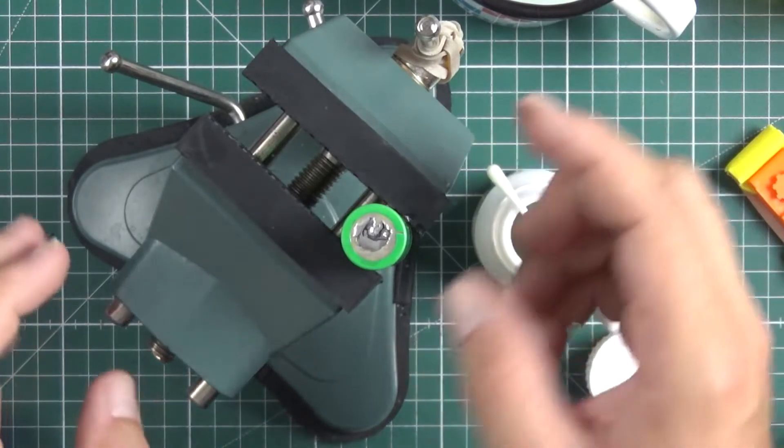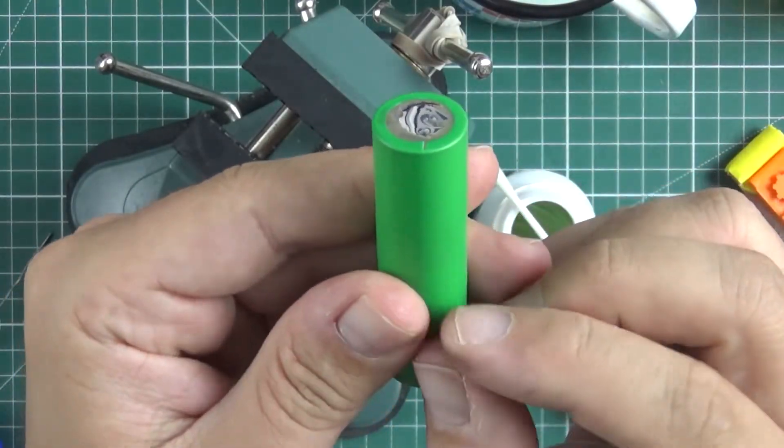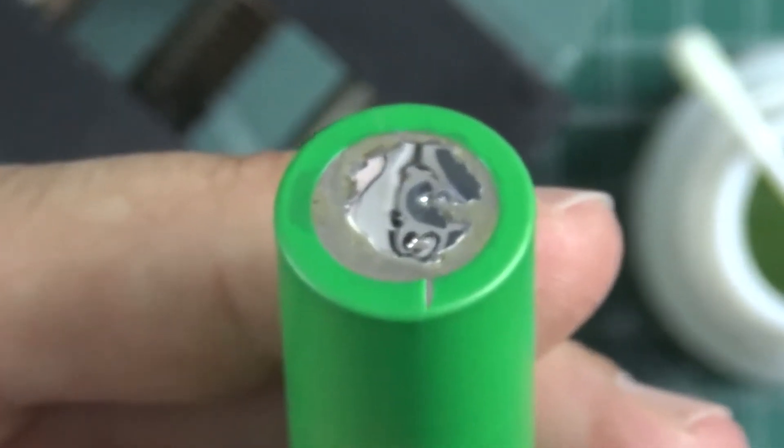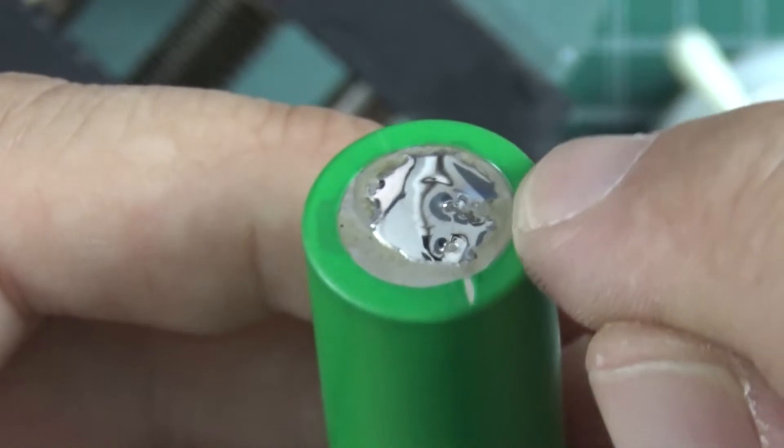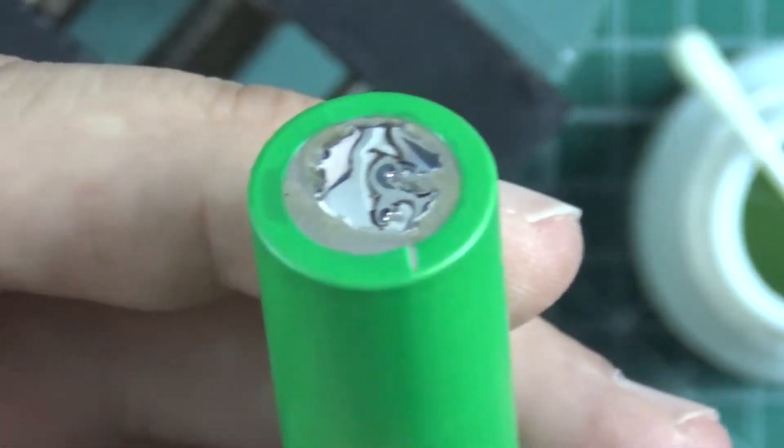It took me like one second and look, I got a thin layer of solder on top of the battery connector in just a second without absolutely any problems.